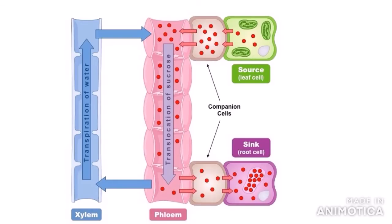This diagram makes it more clear. Sucrose molecules or glucose are produced by the source — the photosynthetic cell. The sucrose molecules are then actively transported into the sieve tube elements via the companion cells using hydrogen ions. This decreases the water potential, so water moves in from the xylem by osmosis. This increases hydrostatic pressure, causing mass flow of the sucrose molecules towards the sink — root cells or respiring cells that need to use the sucrose molecules.